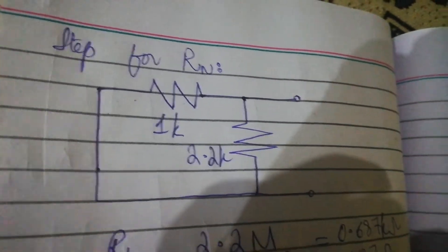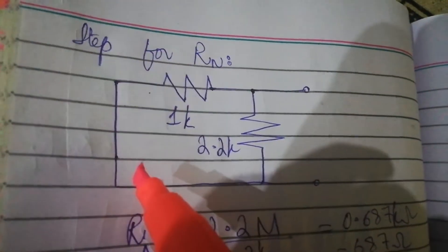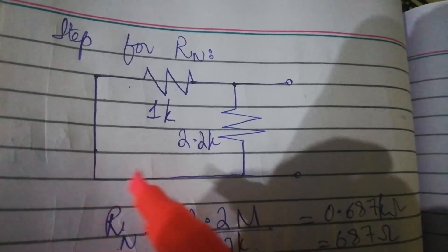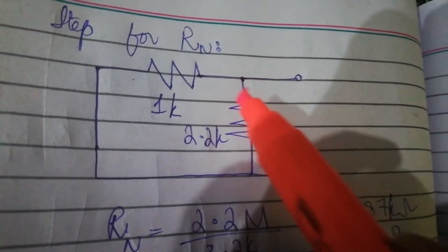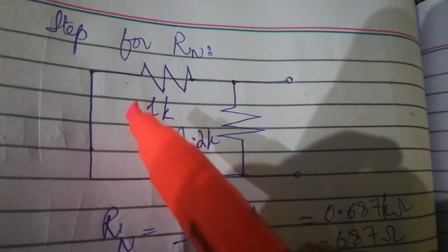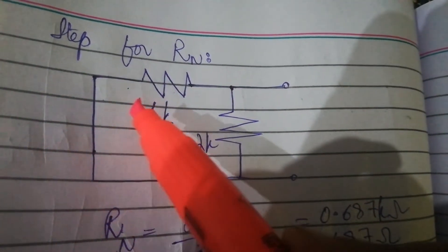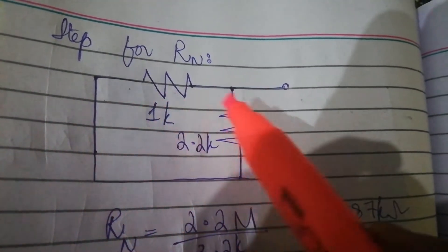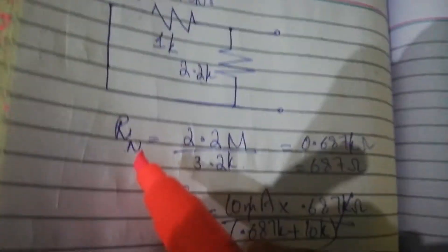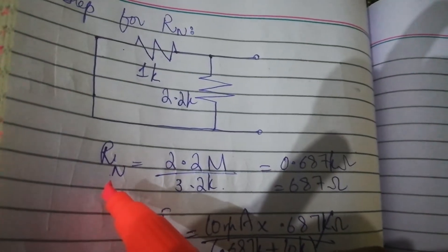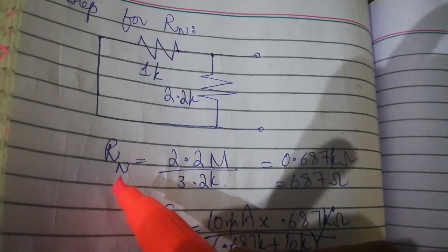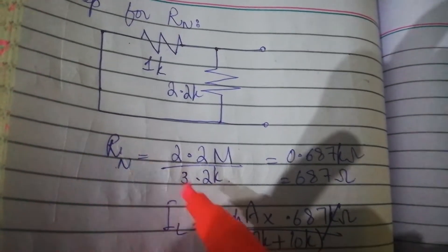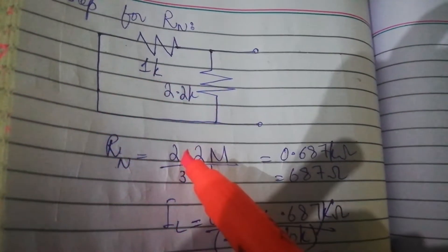Open the load and short the voltage source; current source would be open. Now these two are in parallel combination. We will solve the parallel combinations by multiplying both.